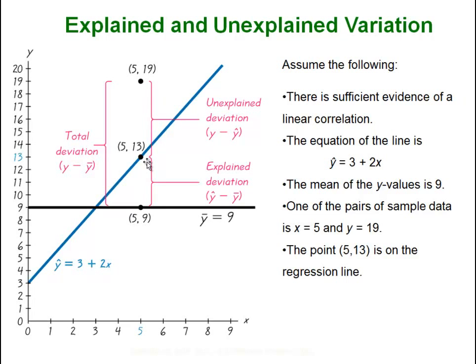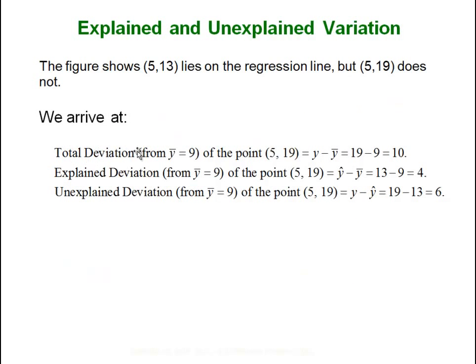When we use our regression equation, instead of guessing 9, we now guess 13. And this deviation that goes from the average up to 13—that's the amount of deviation that's explained. And then from 13 up to 19, that's the amount that isn't explained by our model. Our regression line improved our guess by 4, but it's still off by 6. So the total deviation from ȳ equals 9 is that distance of 10. The explained deviation from ȳ equals 9 was a distance of 4, and the unexplained was a distance of 6.